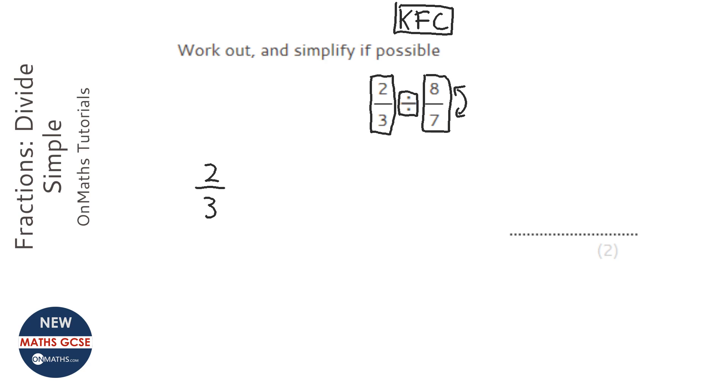We're going to flip the second fraction, so it becomes 7 over 8, and we're going to change that divide to a times. And then you do what you would normally do with the times - you times the top, so 2 times 7 is 14, and 3 times 8 is 24.